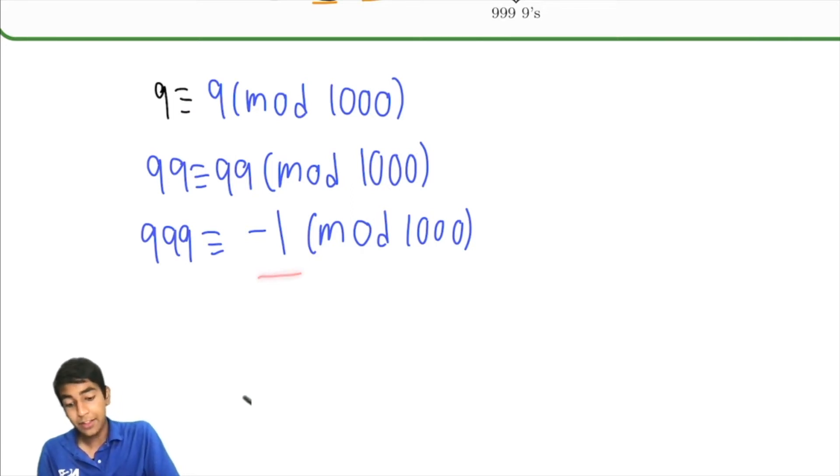The advantage of writing it in this form is, now we just have negative 1. It's just like a simple number versus 999. Okay, now what about the next number? 9999. That's also 999 mod 1,000.